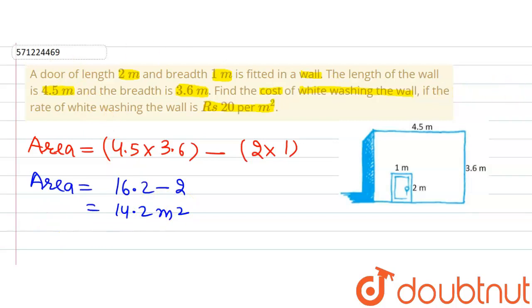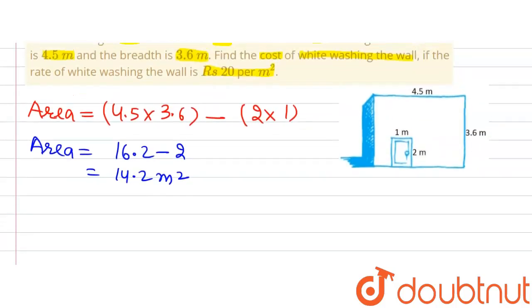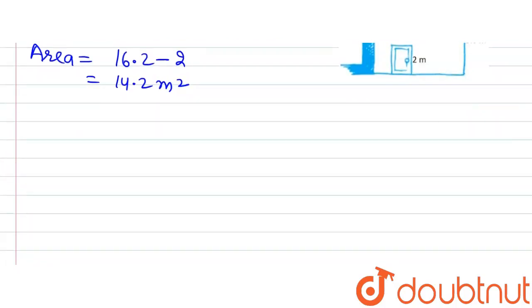Now the question further says that 1 meter square of whitewashing costs Rs 20. So to whitewash 1 meter square of the wall, the cost is Rs 20. But the area that is to be whitewashed is 14.2 meter square, so the cost will be 14.2 multiplied by Rs 20.